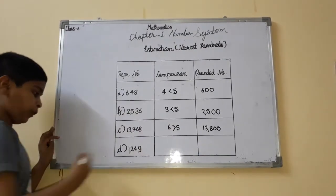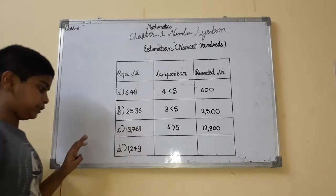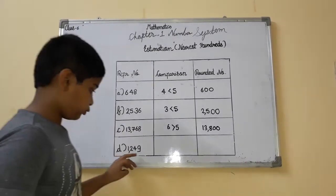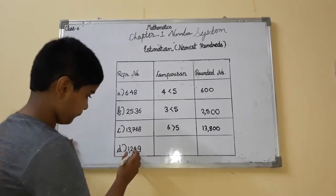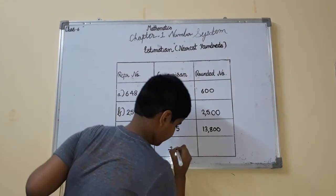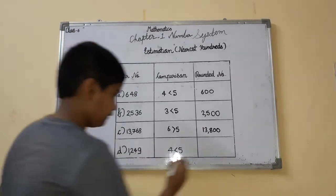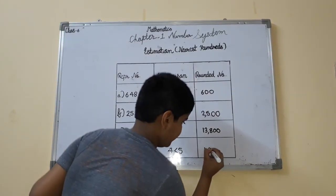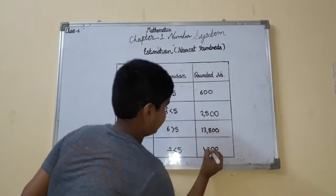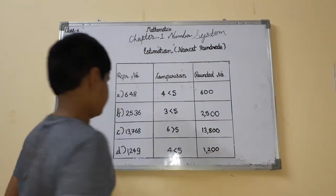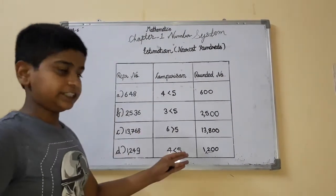Next we have 1249, this is the number. We will check the tens place, which is 4. Now 4 is less than 5. As 4 is less than 5, we will simply put 1,200. All questions are based on these methods.